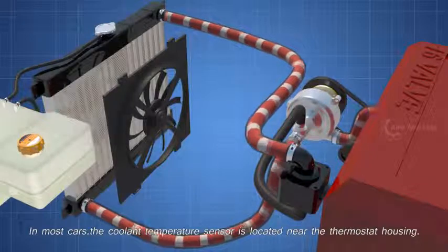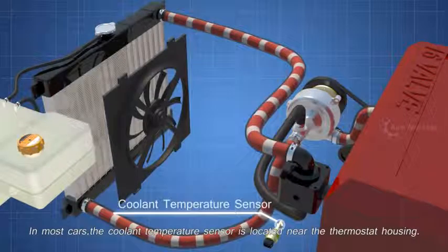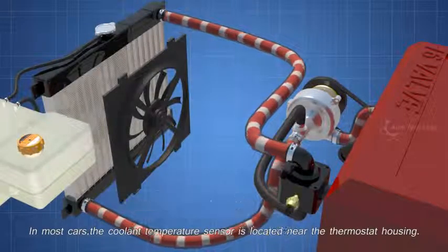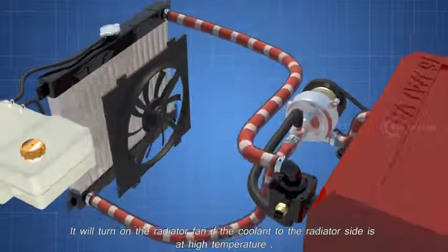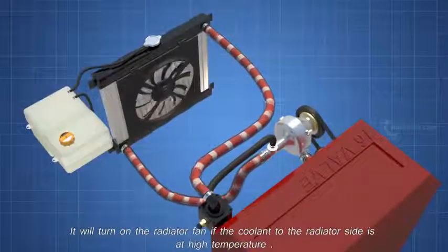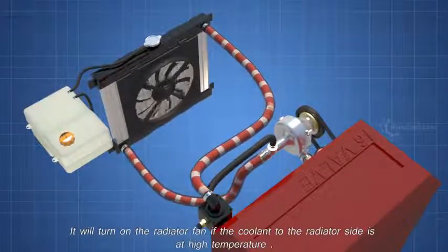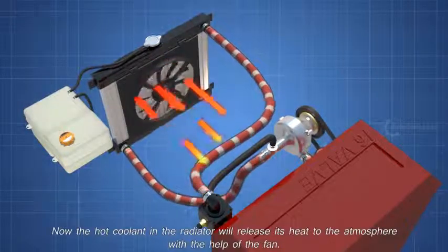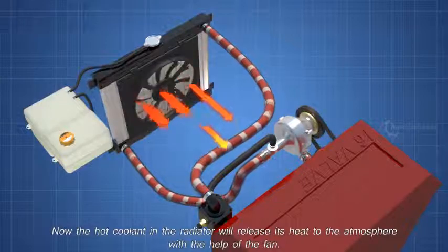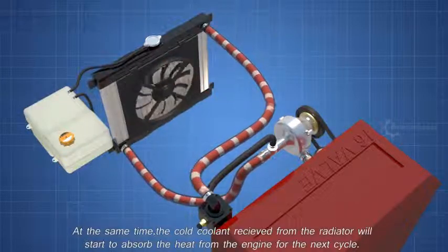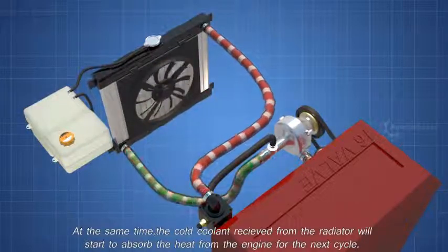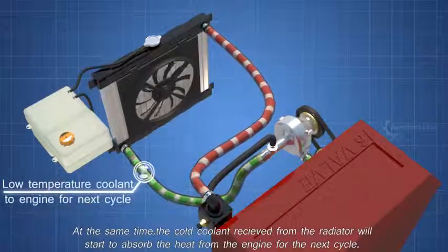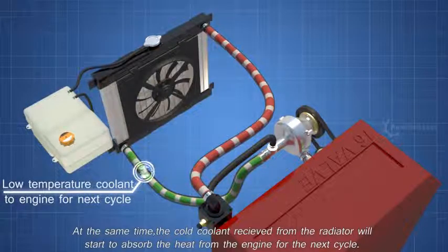In most cars, the coolant temperature sensor is located near the thermostat housing. It will turn on the radiator fan if the coolant to the radiator side is at high temperature. Now, the hot coolant in the radiator will release its heat to the atmosphere with the help of the fan. At the same time, the cold coolant received from the radiator will start to absorb the heat from the engine for the next cycle.